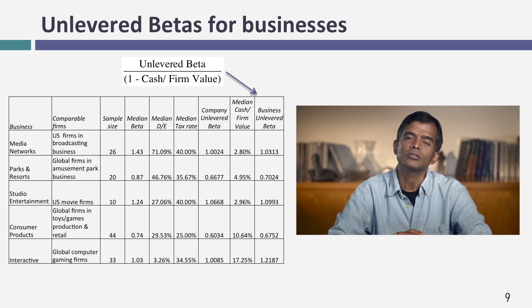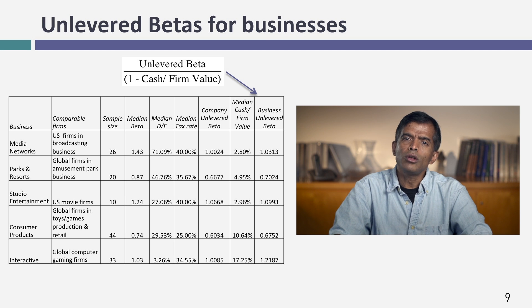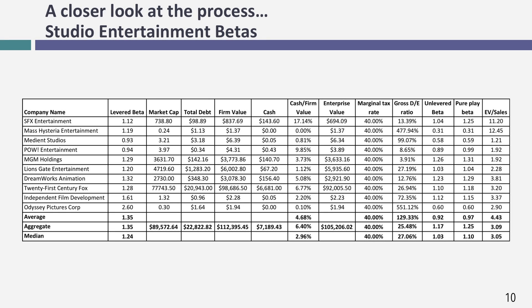To get a beta for Disney's movie business, I went looking for publicly traded movie companies. I found 10 publicly traded U.S. companies in the movie business. They have very different market capitalizations — ranging from tiny companies like Odyssey to huge ones like 21st Century Fox — but since they're all publicly traded, I have regression betas for each. I can also get their market value, debt, and cash, which allows me to compute the debt-to-equity ratio and how much cash each company holds as a percentage of firm value.